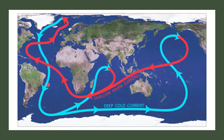This map shows you the ocean currents of the world in very basic form. They are in fact far more complex, but this simplified diagram will help you introduce yourself to the basic concepts. You'll see that there are red arrows, which represent shallow warm currents, and blue arrows that represent deep cold currents.